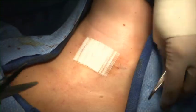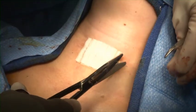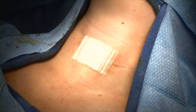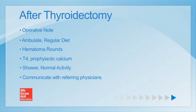During extubation, coughing is avoided if possible. It is inaccurate and intrusive to attempt to check vocal cord function during extubation. The operative note is dictated promptly. It describes the extent of thyroidectomy, completeness of resection, and any gross extension or local invasion — information which is integral to staging. The operative note also describes the location and status of the nerves and all parathyroid glands.